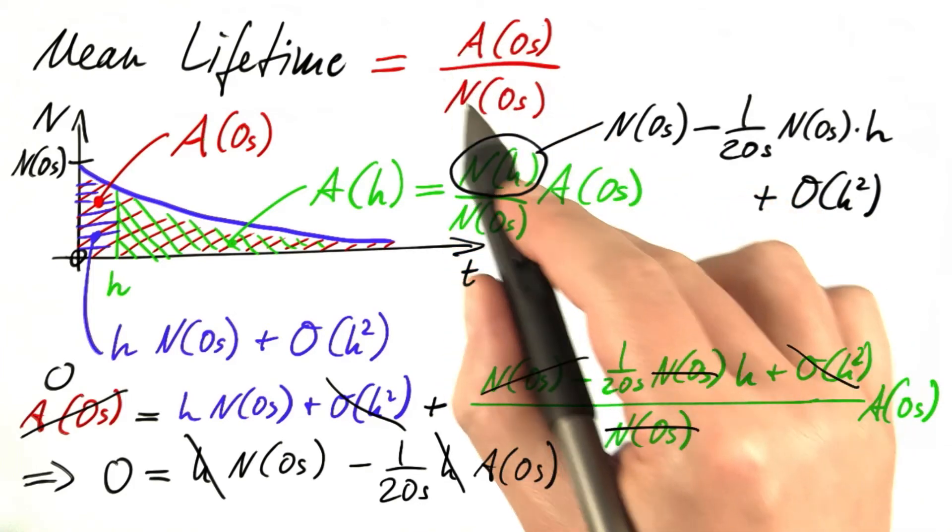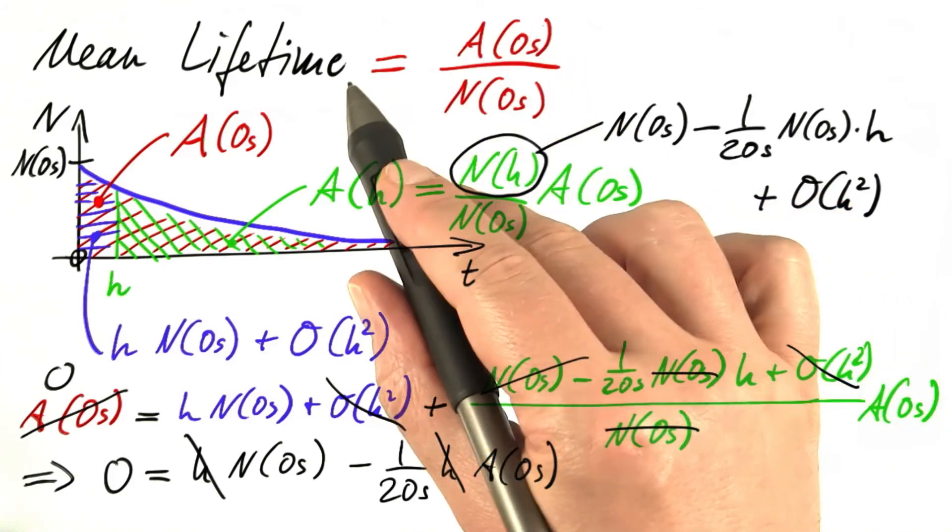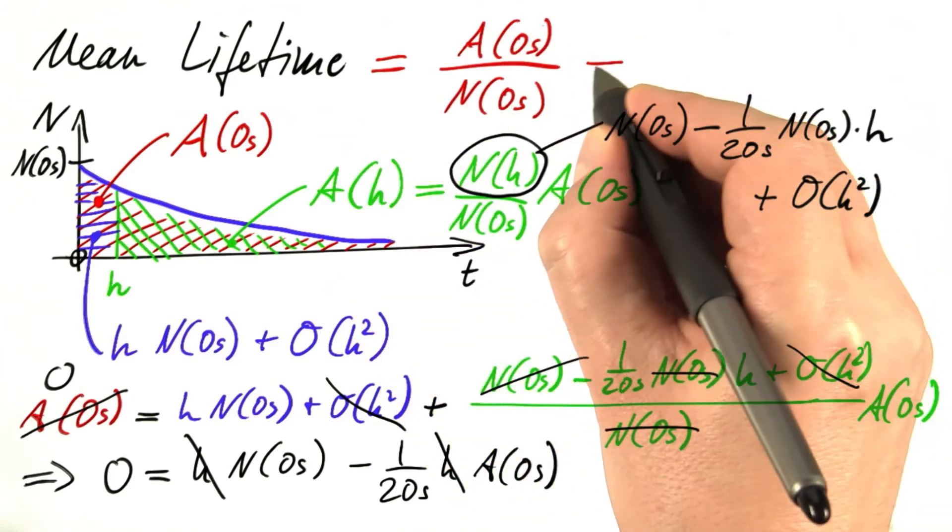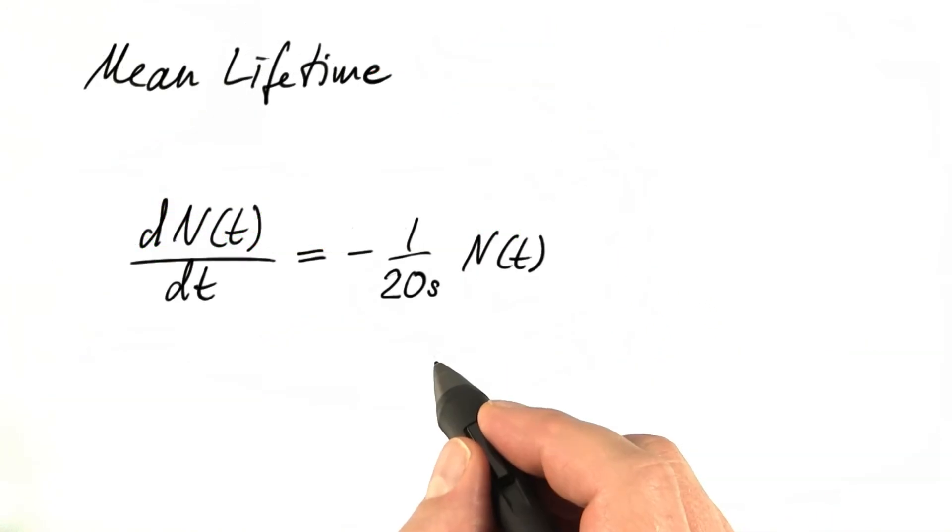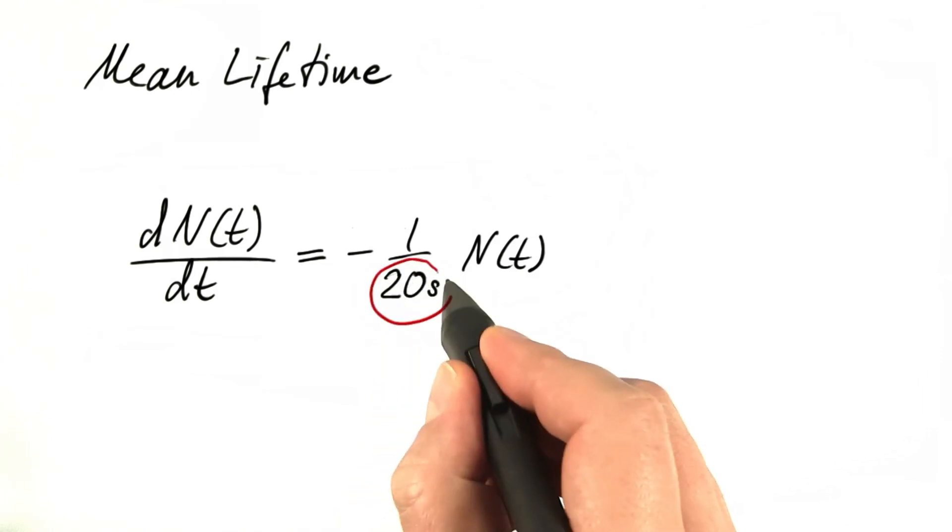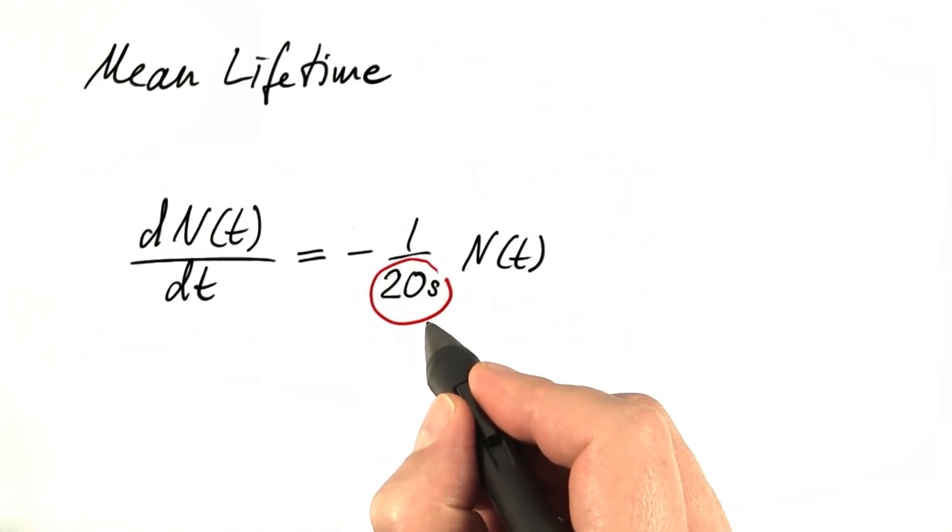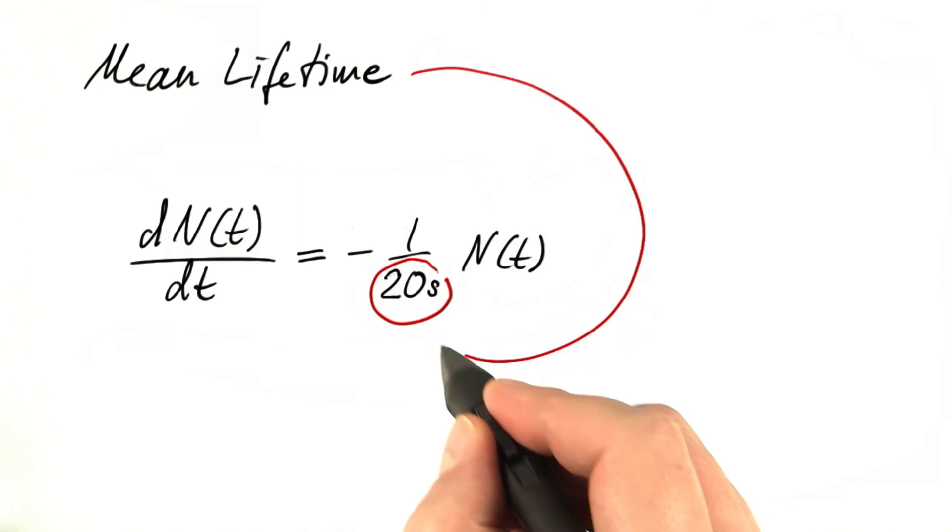So this ratio, which is the mean lifetime equals, guess what, 20 seconds. So astonishingly, this number that appears in the differential equation is nothing but the mean lifetime.